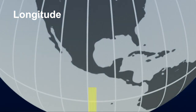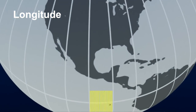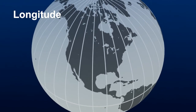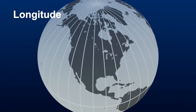Each degree of longitude can be broken down into minutes and seconds as well, but lines of longitude are not parallel to each other like lines of latitude. They are farthest apart at the equator, then narrow to a point at the poles.